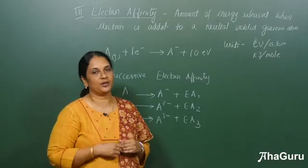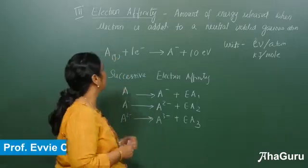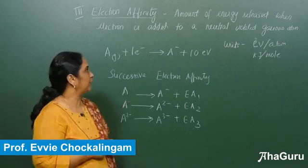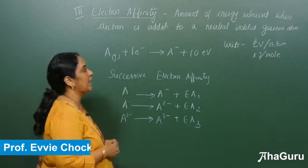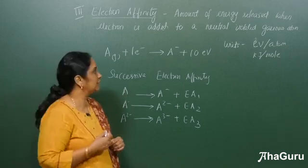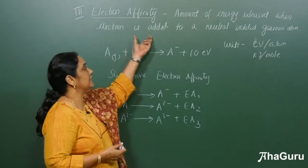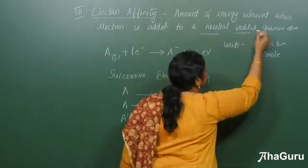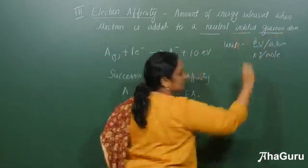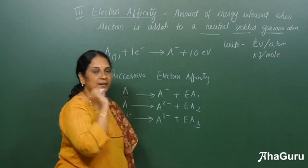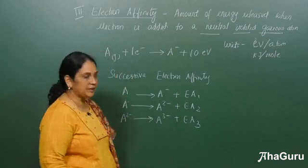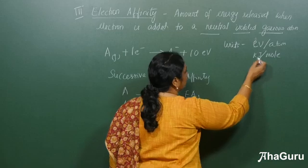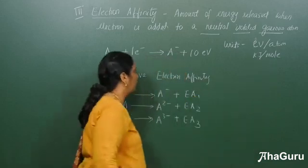Let us see the next periodic property: electron affinity. Electron affinity is the amount of energy released when an electron is added to a neutral isolated gaseous atom. The units are either electron volt per atom or kilojoules per mole.